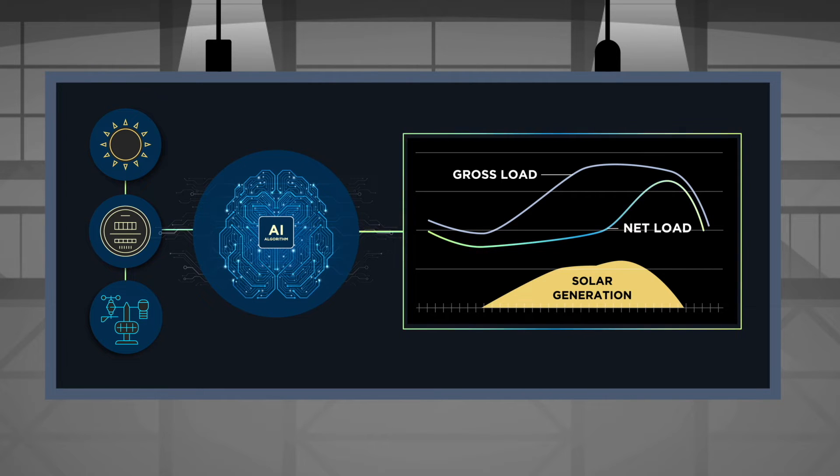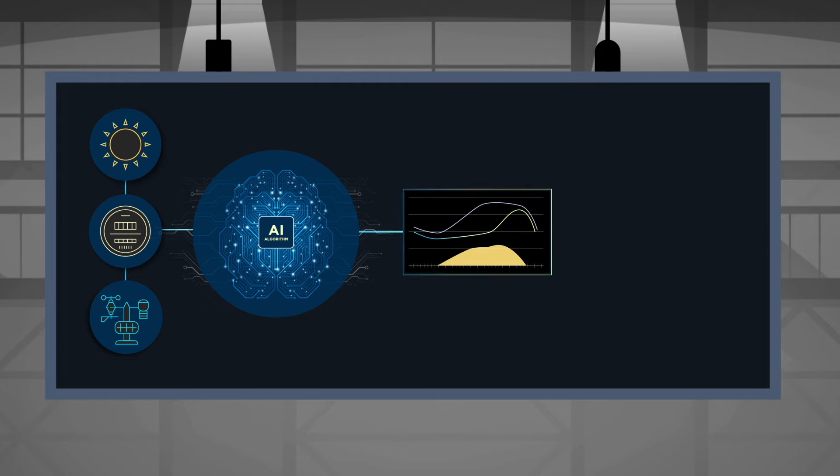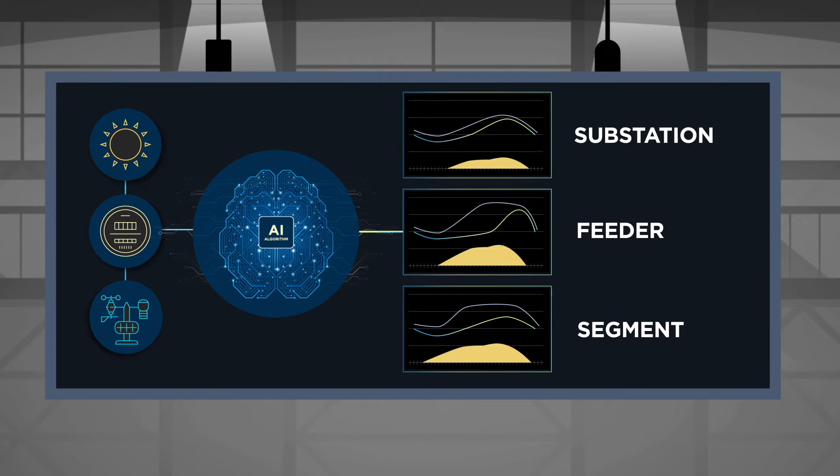But it can also estimate generation and gross load at different hierarchies in the distribution system, including at the substation, feeder, and segment.